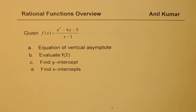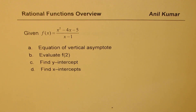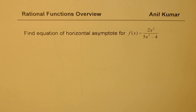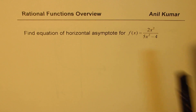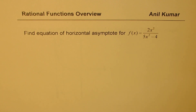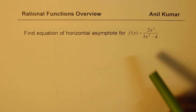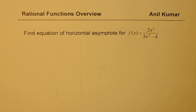In the very first question we'll try to understand how to find the vertical asymptote, how to evaluate at a particular point, and how to find x and y intercepts for a rational function. Then in the second question we'll concentrate more on horizontal asymptote. Whenever the degree of numerator and denominator is the same, we get a horizontal asymptote — in this case the answer is 2 over 5.